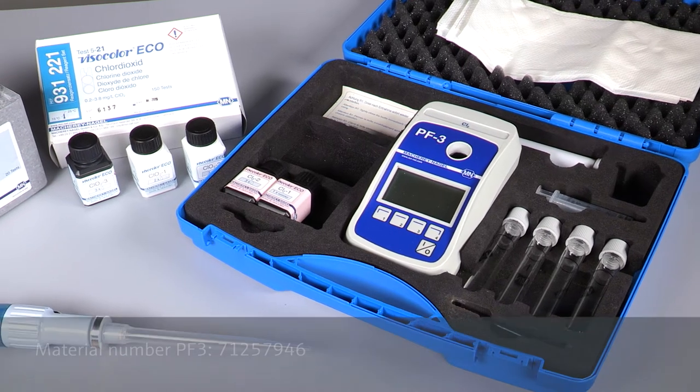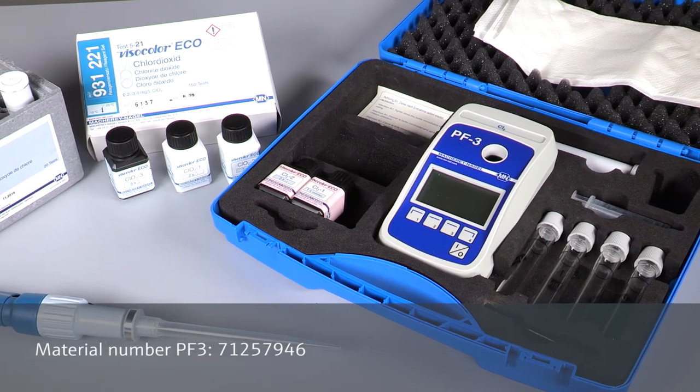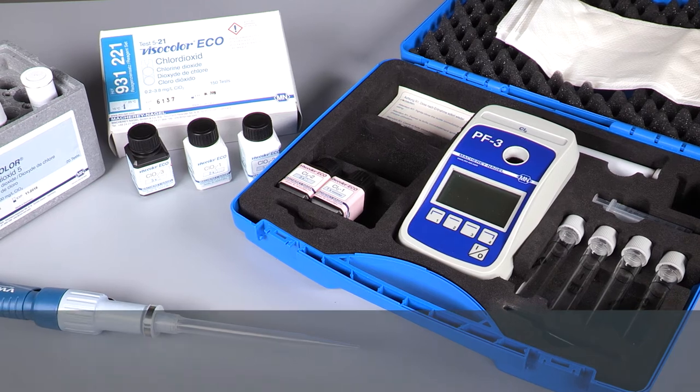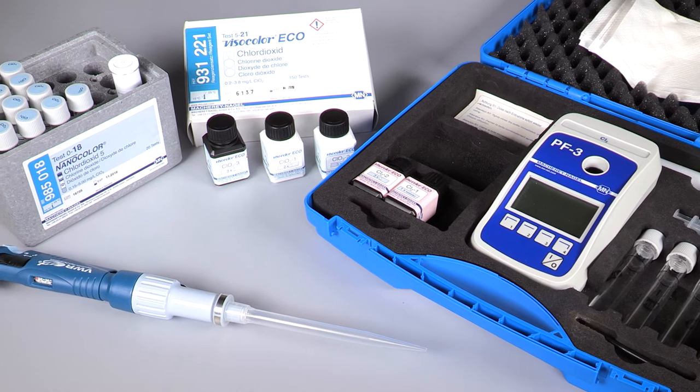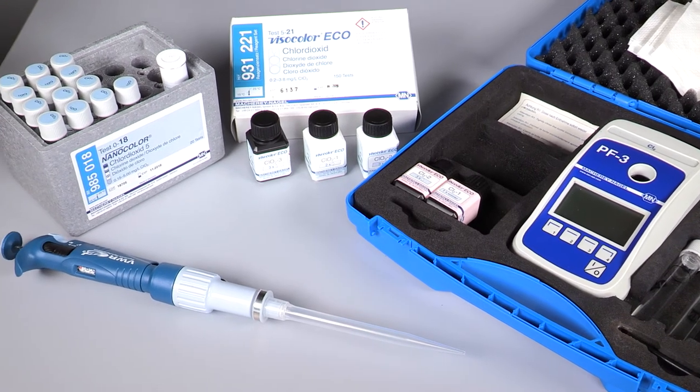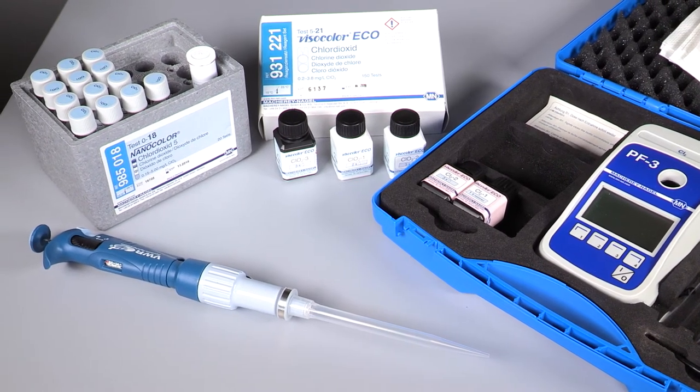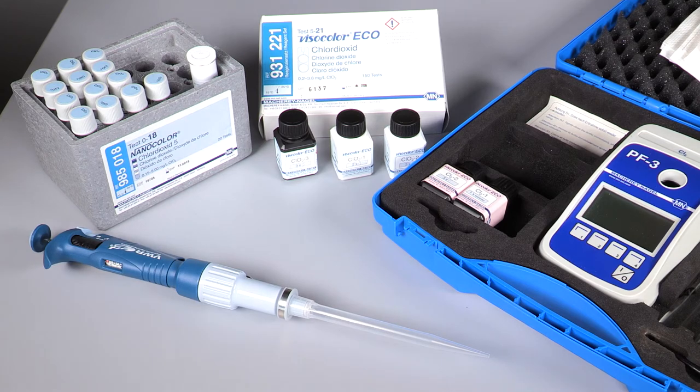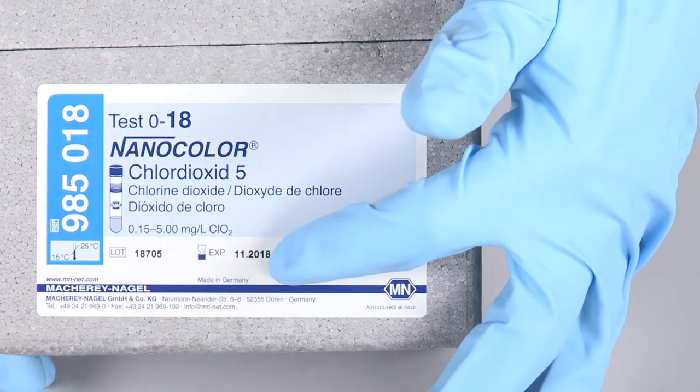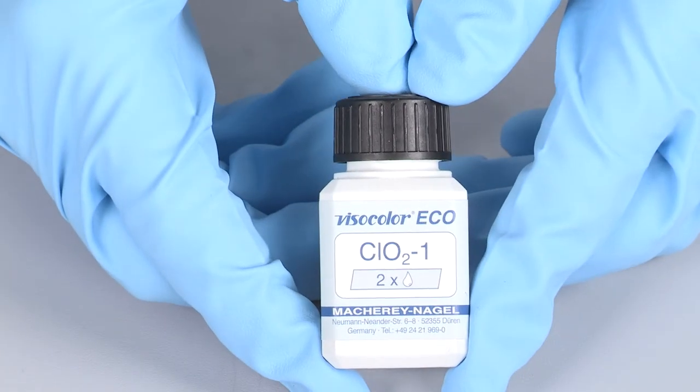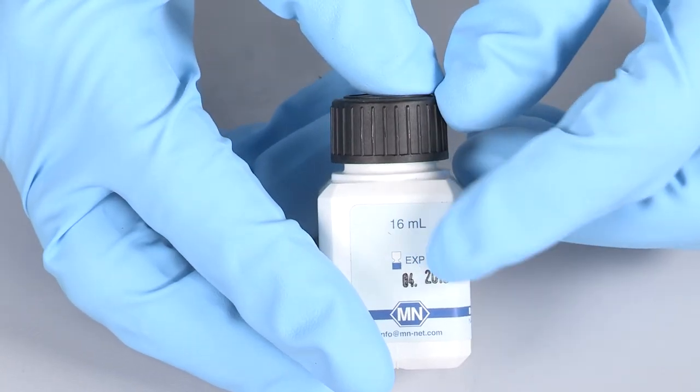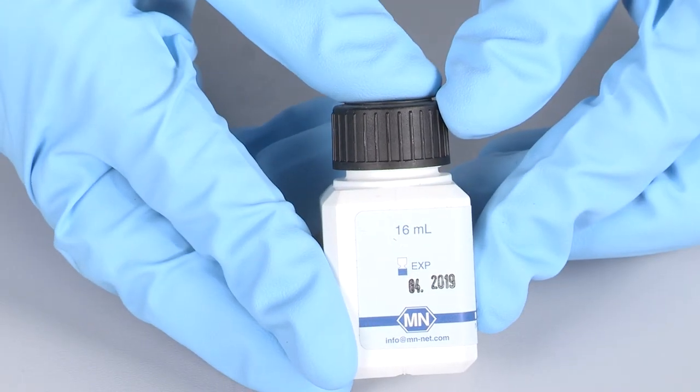Analyzing the Chlorine Dioxide concentration of the sample is done offline with a colorimetric measurement according to the DPD method. Therefore we need a portable photometer, cuvettes and DPD reagents or a ready-made cuvette test. The reagents have a limited shelf life so please check the expiry date before you start with the calibration. In this video we will show you the procedure with the cuvette test.